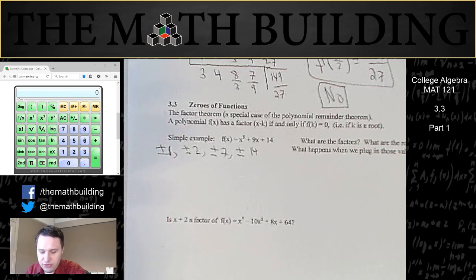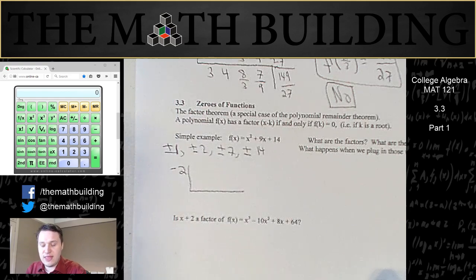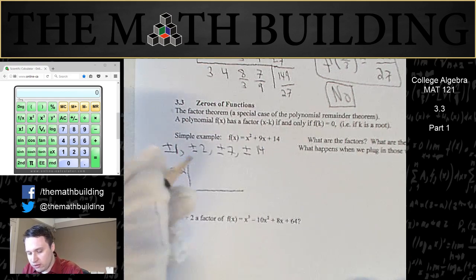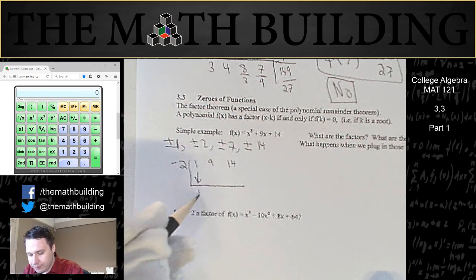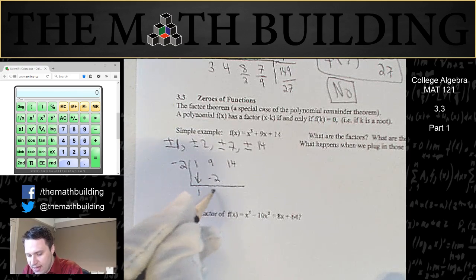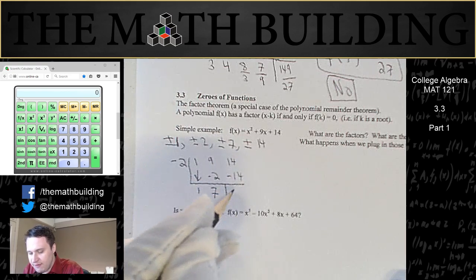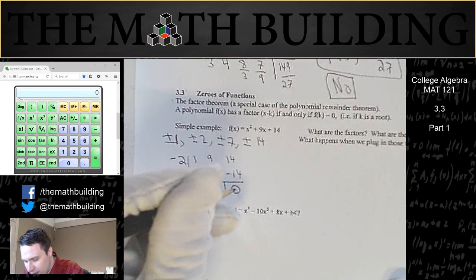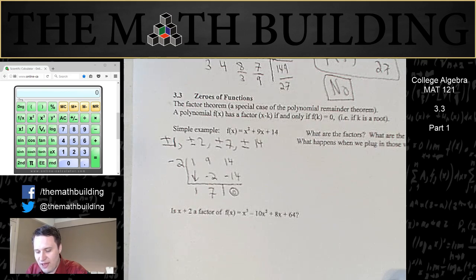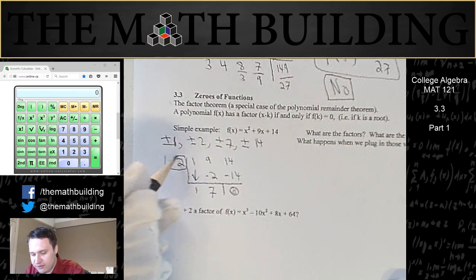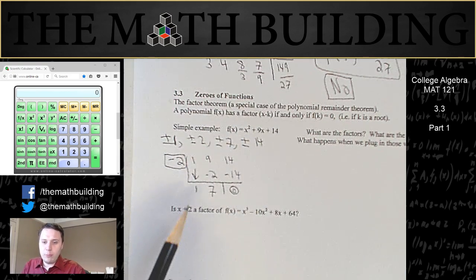Using trial and error, since I know the answer, let's try negative 2 using synthetic division. We write in our coefficients: 1, 9, and 14. Bring down the 1. Negative 2 times 1 is negative 2. Add those together to get 7. Negative 2 times 7 is negative 14. 14 minus 14 is 0. I'm going to draw a little smiley face because that's great news — we found our first factor. So negative 2 is a solution, negative 2 is a root. If you plug in negative 2, you're going to get 0.